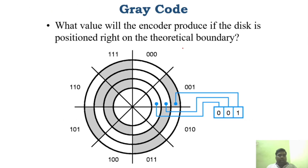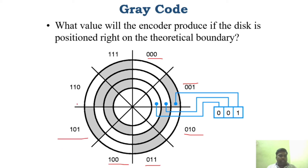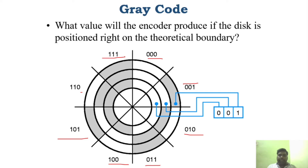This is the grey code representation: 000, 001, 010, 011 — you can see only one bit changes each time. It starts at 000, 001, 010, 011, 100, 101, 110, 111. Between each and every digit representation, you have only one bit changing.